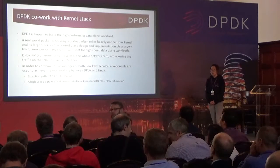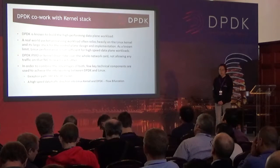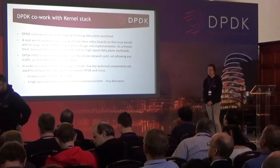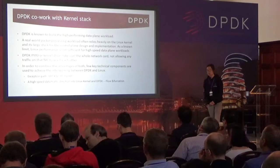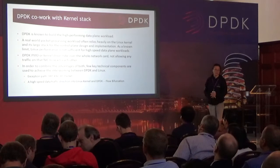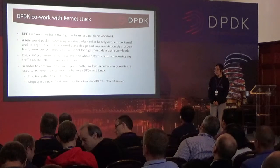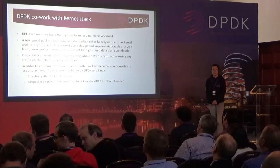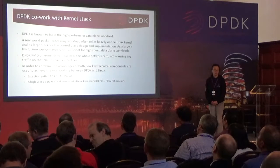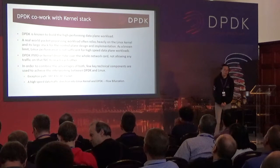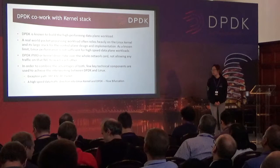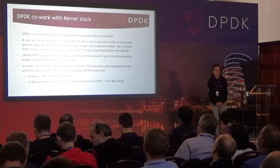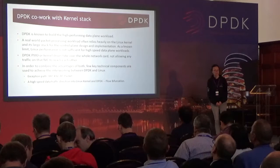As we know, DPDK is well known for building high-performance data plane forwarding workloads. But how about the control plane? A lot of real-world packet processing depends on the kernel stack. So to combine the advantages of both, we need DPDK to co-work and interwork with the kernel. There are two ways to interwork with the kernel. The first is the exception path, such as TAP, KNI, and AF_PACKET.